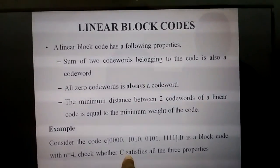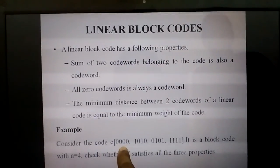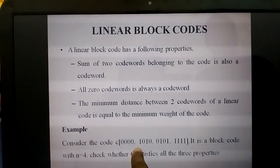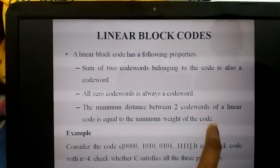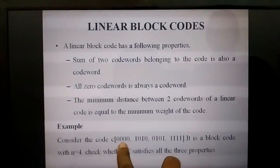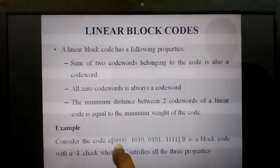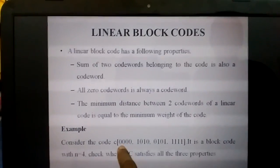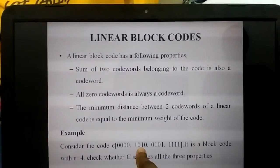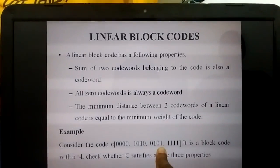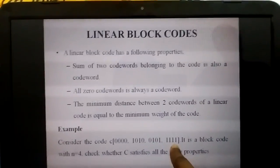Next, we find the minimum weight of the code. Minimum weight is simpler — we only need one code word. The weight of a code word is the number of ones present in it. For the first code word with all zeros, the weight is zero. The second code word has two ones, so its weight is two. The last code word has four ones, so its weight is four.